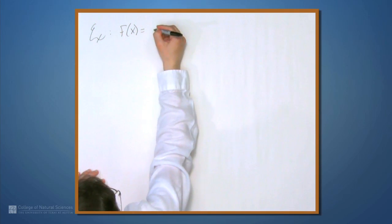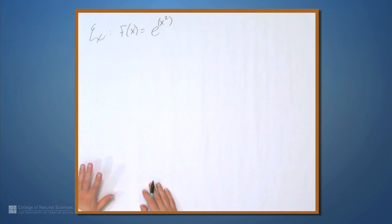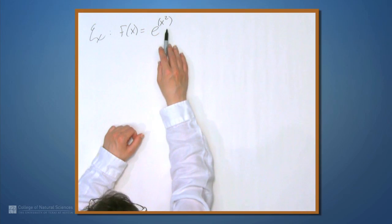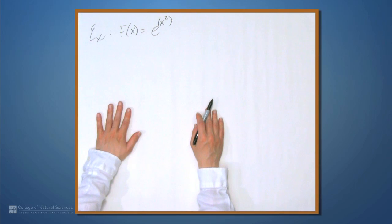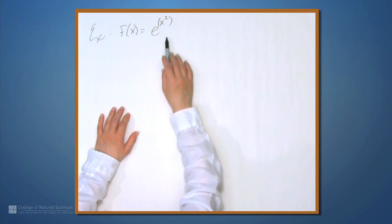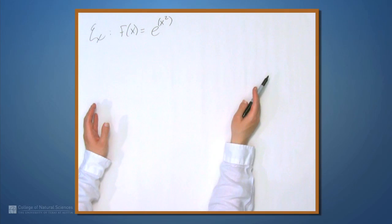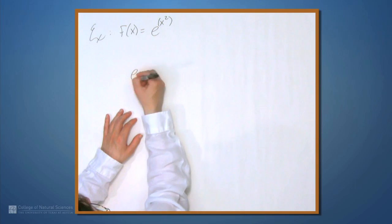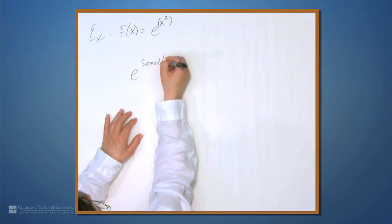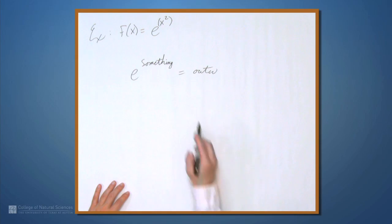This time, let's set f equal to e to the x-squared. Again, we have to split this into two functions. And if you have trouble splitting it into two functions, think about how you would compute this. You compute things from the inside out. Sort of an order of operations issue. If you were to compute this, you would first figure out x-squared. And then you would raise e to whatever that number is. So when you're using the chain rule, you're going to go in the opposite direction. e to something is the outer function. That's where you're going to start. So e to the something, this is the outer function. The inner function is exactly this something. So it's just the x-squared.